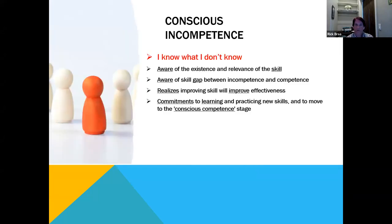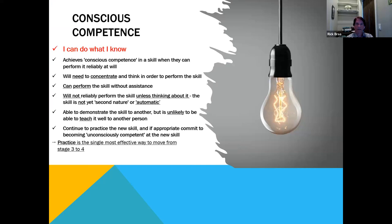Conscious incompetence is: I know what I don't know. I can't quite do it yet. I'm aware I have a skill gap. At this point they commit to learning and practicing to reach conscious competence. Then they get to conscious competence and they can do. Know, do, teach, master. They can do what they know, but they need to concentrate — they can't do it with their eyes closed and are unlikely to be able to teach others yet. Practice, practice, practice to get from stage three to stage four.